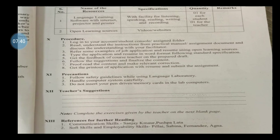Procedures: log in to your account, consult the assigned folders, read and understand the instructions from the practical manual. Discuss your understanding with your facilitator. Refer to some examples of job applications and resumes using open learning sources. Type the application and resume in Word format following standard specifications. Get feedback from the course teacher on the prepared draft. Follow the suggestions and finalize the content. Proofread the content and make relevant corrections. Get a printout of the application with resume and submit the assignment.